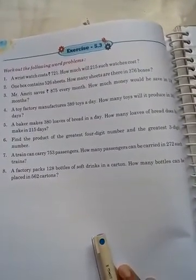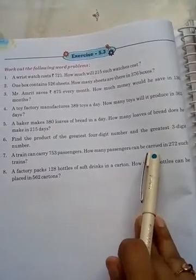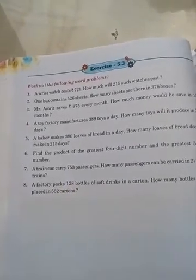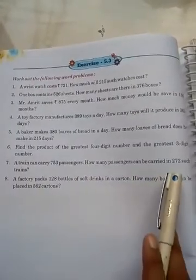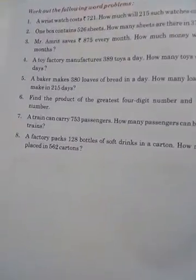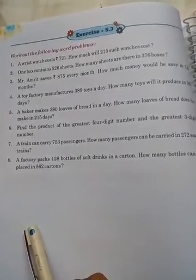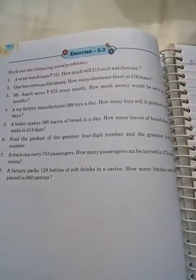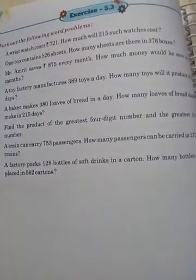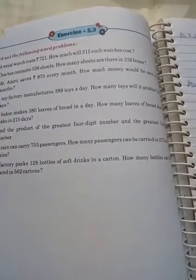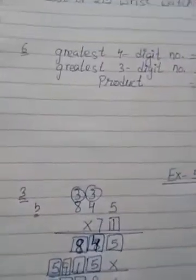Problem 7: A train can carry 753 passengers. How many passengers can be carried in 272 such trains? First write the number of passengers in one train, then the number of trains (272), then find the product of both numbers. Problem 8: A factory packs 128 bottles of soft drink in a carton. How many bottles can be placed in 562 cartons? Multiply 128 by 562. That is the last exercise of the chapter.